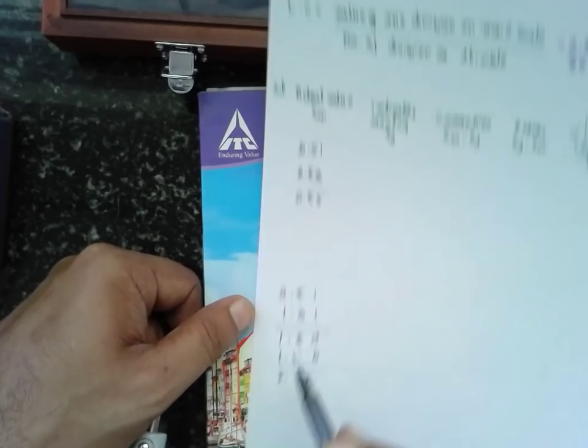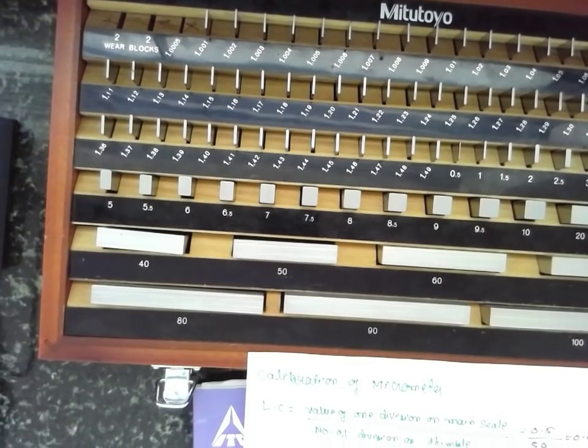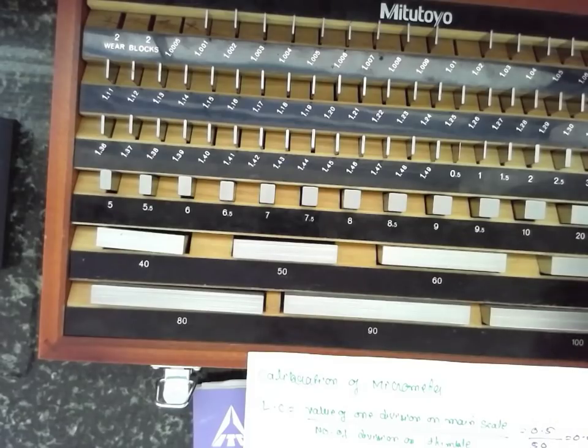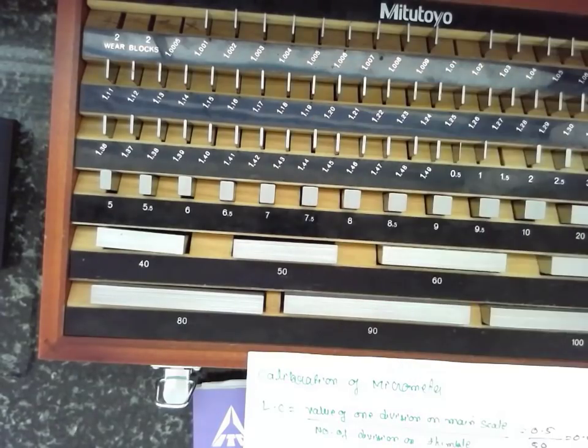These slip gauges are available in a slip gauge box. This is the slip gauge box. I have to make the combination of 1.10, 1.01 and 1.5. These are the combinations I have to pick and I have to go for ringing phenomena.